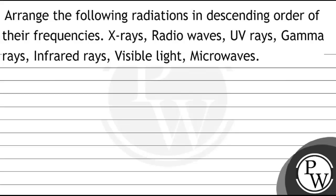Hello, let us see this question. The question says: Arrange the following radiations in descending order of their frequencies — X-rays, radio waves, UV rays, gamma rays, infrared rays, visible light, and microwaves.